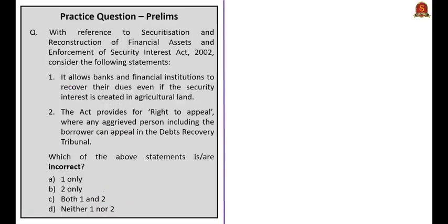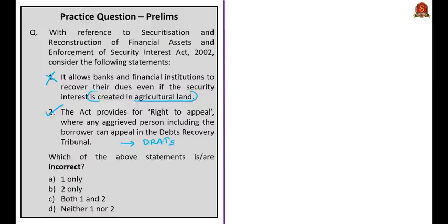Fourth question: with reference to the SARFAESI Act of 2002, consider the following statements. Statement one: it allows banks and financial institutions to recover their dues even if the security interest is created in agricultural land. This is incorrect — the provisions of the SARFAESI Act do not apply when the security interest does not exceed 1 lakh rupees or when any security interest is created in agricultural land. Statement two: the Act provides for a right to appeal where an aggrieved person including the borrower can appeal in the Debt Recovery Tribunal. This is correct — and the DRT's decision can further be appealed in Debt Recovery Appellate Tribunals or DRATs. Since statement one is incorrect and statement two is correct, the correct answer is option A.